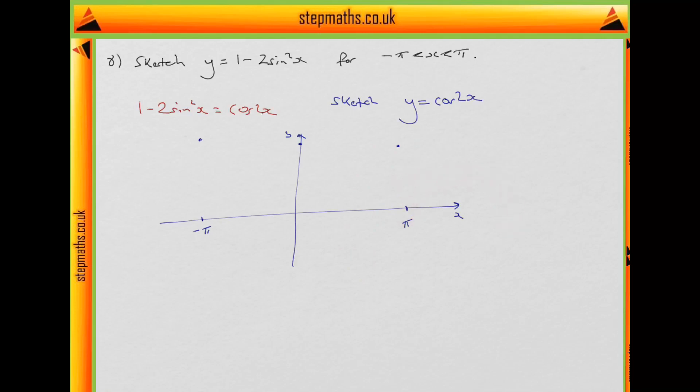So we can simply now sketch that one. We know it's going to start at 1, come down. So it's going to be at minus pi, 1. It's going to come down to a minus 1 value down here. So go down like this. Strike 0, hit minus 1, come back up. Go down again, hit minus 1, and come back up. So that would be our curve.